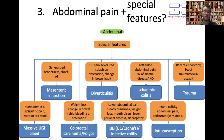A common condition is diverticulitis — patients usually describe a splash of blood in the toilet pan, might have a slight change in bowel habits. Because it's usually in the sigmoid colon, they end up with left iliac fossa pain and may have a fever due to the infection.